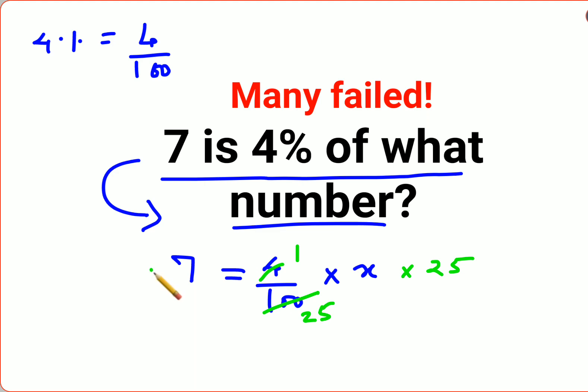So basically you're multiplying both sides by 25. This 25 and 25 gets cancelled over here, and the value of x comes out to be 175.